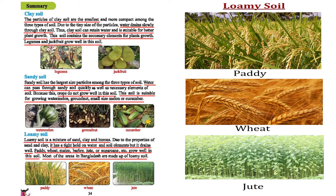Paddy, wheat, maize, barley, jute, and sugarcane all grow well in loamy soil. Most interestingly, most areas of Bangladesh consist of loamy soil. Since we are an agricultural country, a huge number of crops grow in our soil. Loamy soil is one of the best soils for producing crops, as it can both hold water and drain water very well, giving us many different crops.